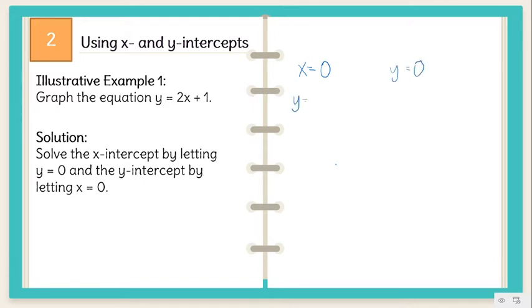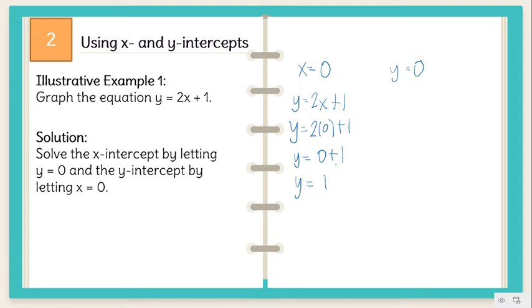We have Y is equal to 2X plus 1. Substitute 0 to X. So we have 2 times 0 plus 1. We have Y is equal to 0 plus 1, so Y is equal to 1. When X is equal to 0, Y is 1. So we have the point (0, 1).